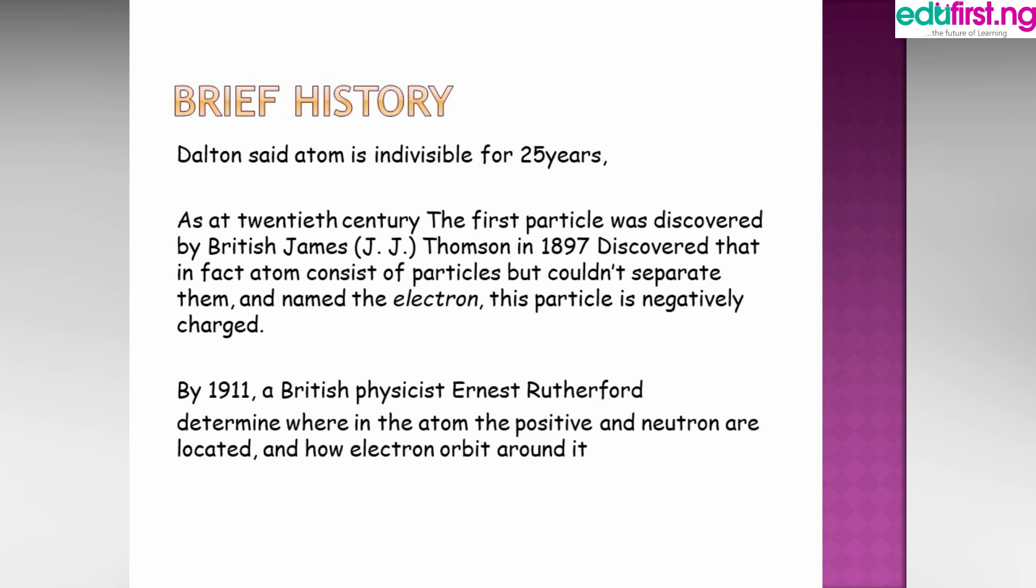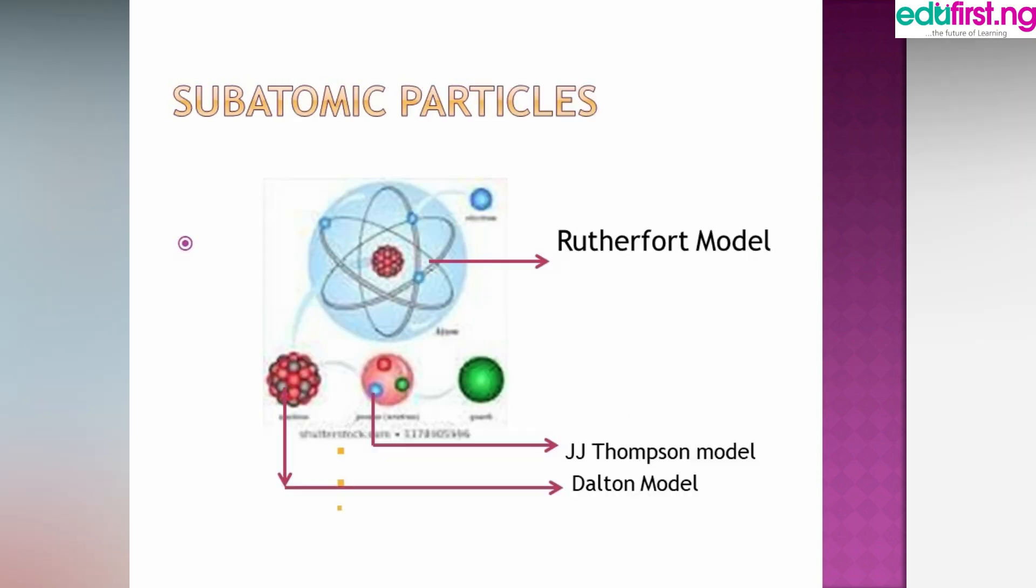them subatomic particles. The diagram showing Rutherford's model, J.J. Thompson's model, and Dalton's model. Rutherford found the electron, neutron, and proton. Dalton only knew of the atom being whole. J.J. Thompson identified the electron but couldn't identify the positive and the neutral in the atom.